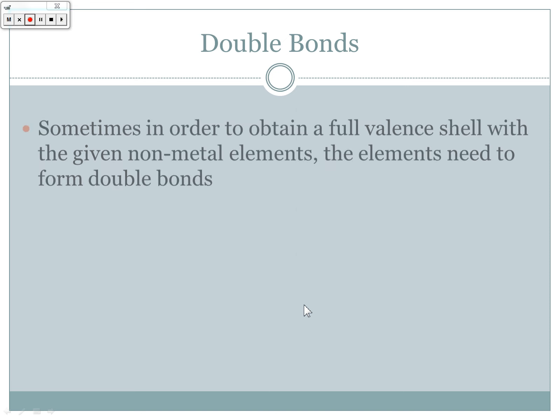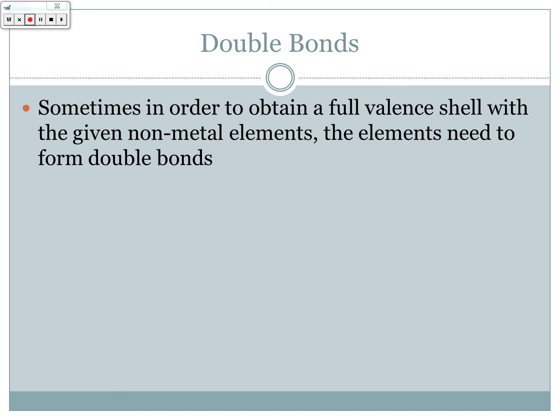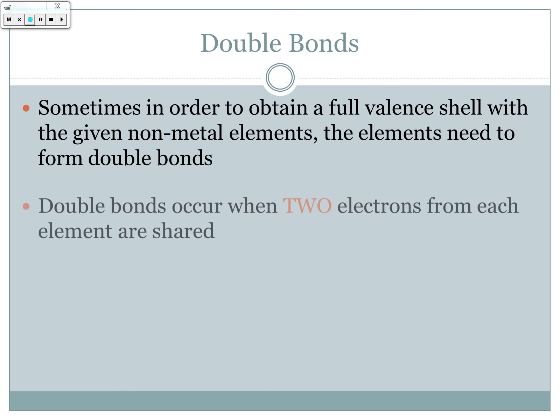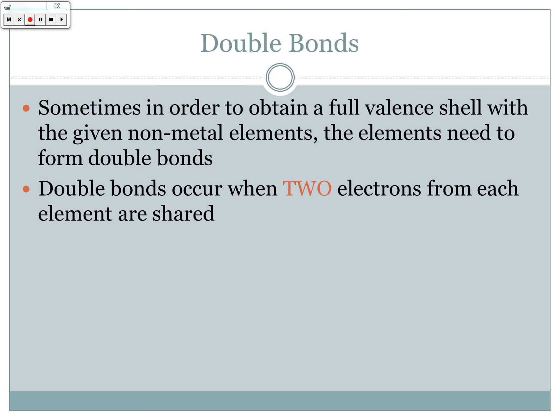Sometimes in order to obtain a full valence shell with nonmetal elements, the elements need to form double bonds. This happens when two electrons from each element are shared. For example, with carbon and oxygen — oxygen atoms have six valence electrons, so they need to gain two more to complete their octet. Carbon only has four valence electrons, so it needs to gain four more electrons to complete its octet. Each oxygen is going to share its two lone electrons with two of carbon's electrons to form what we call double bonds.